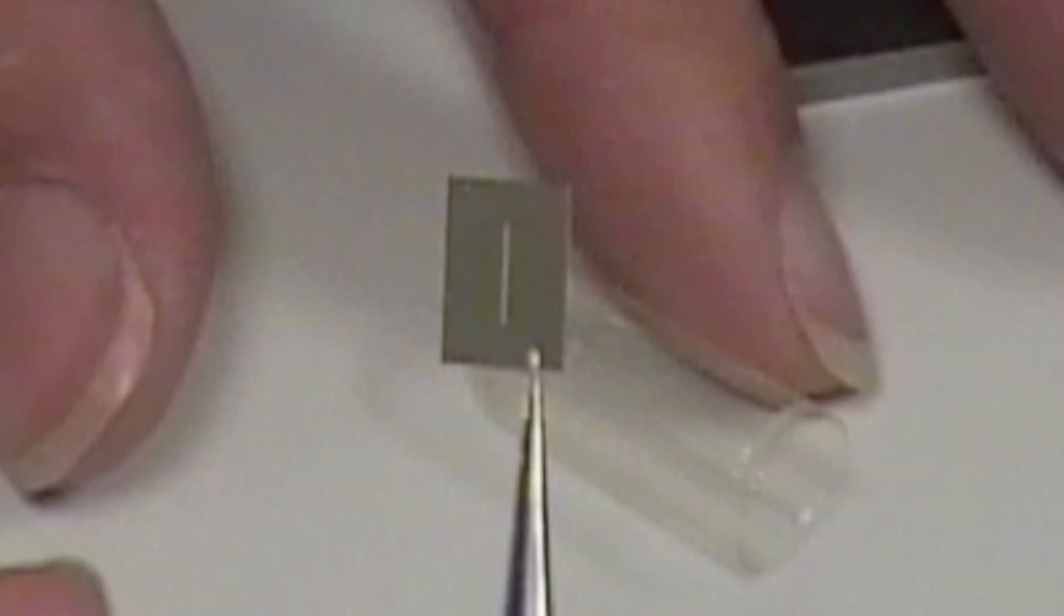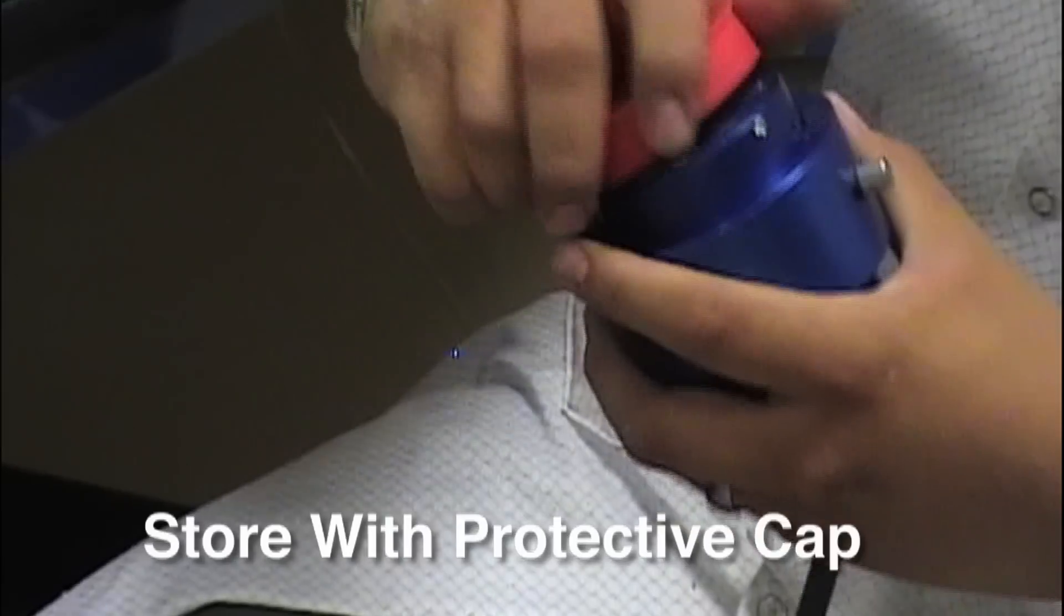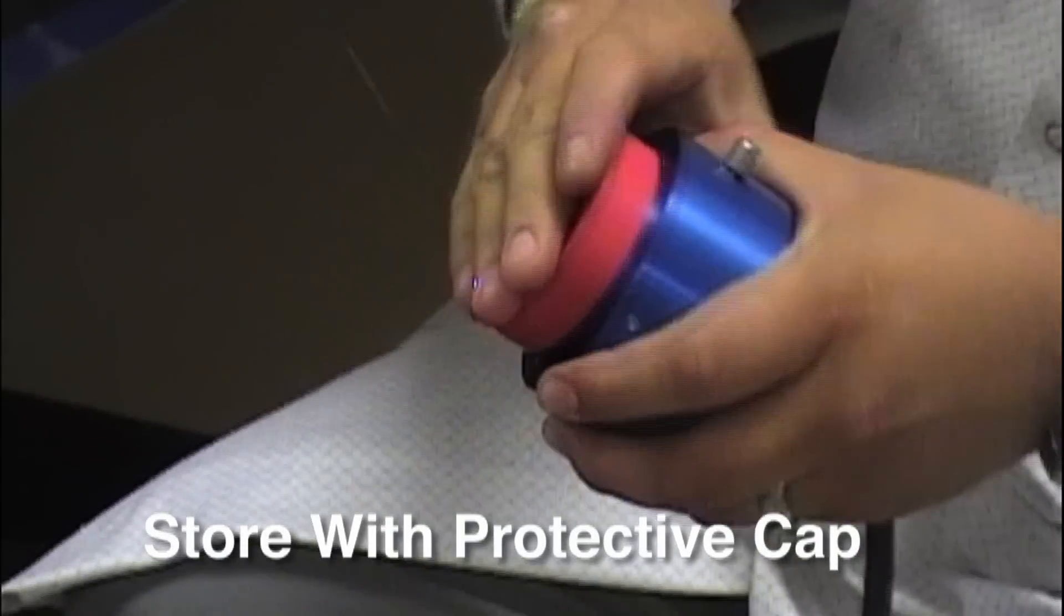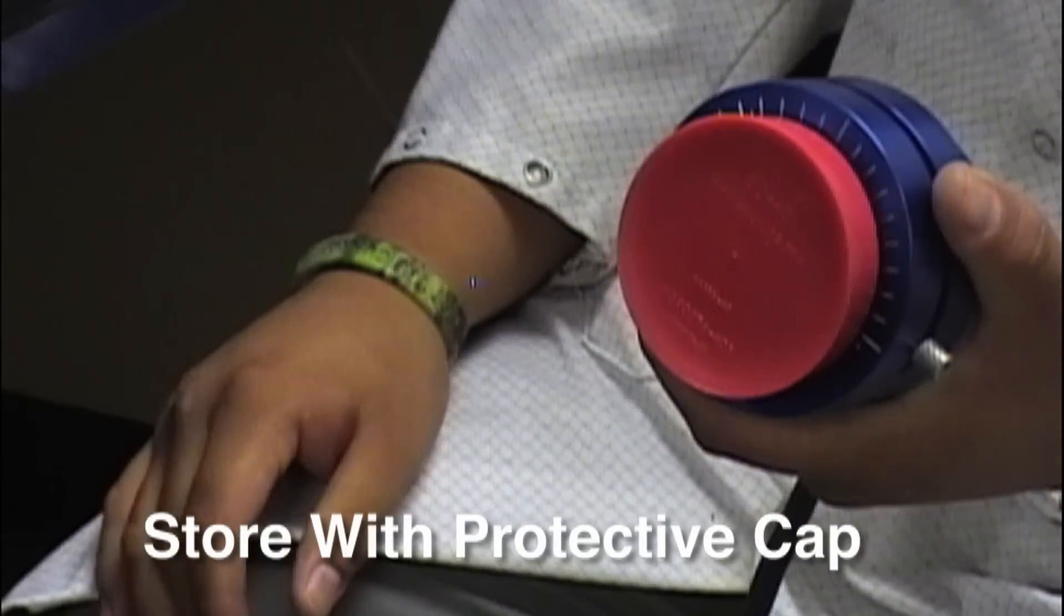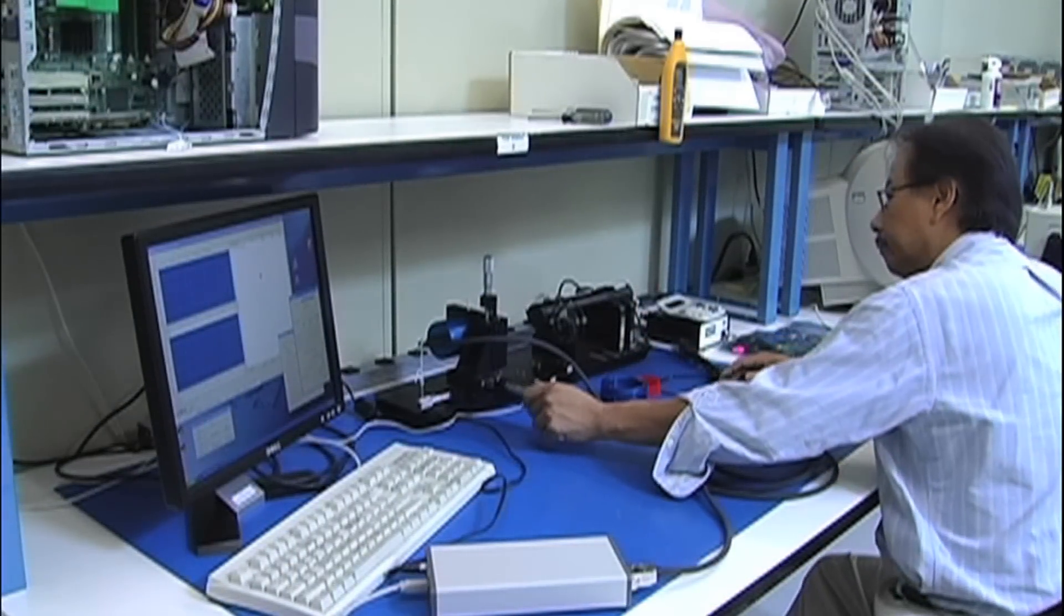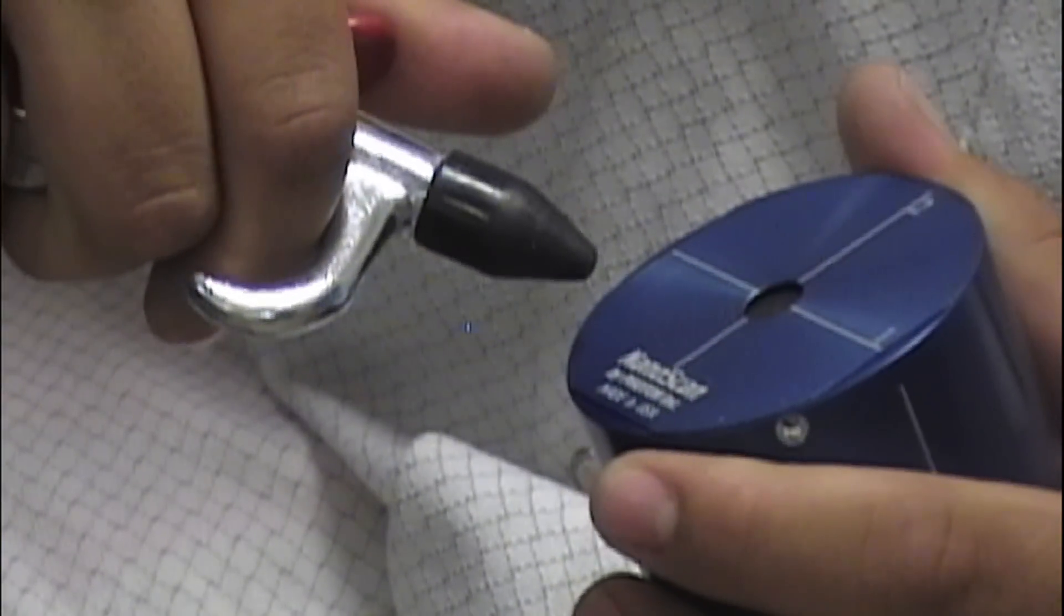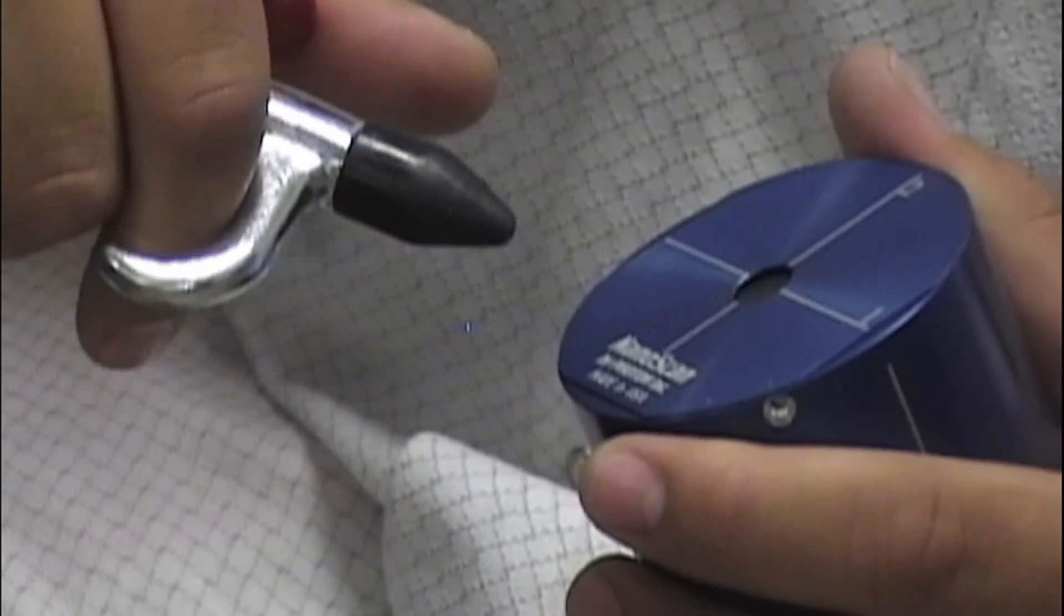Debris such as dust particles can lodge in the very fine openings of the slits or pinholes. Therefore, when the system is not in use, it is recommended that the protective plastic cap be used to cover the scan head entrance aperture. If inconsistent performance is observed and contamination by debris is suspected, a clean jet of compressed gas may solve the problem.